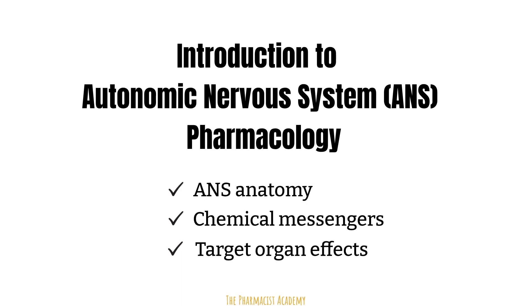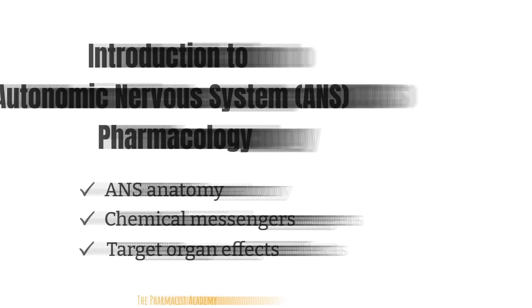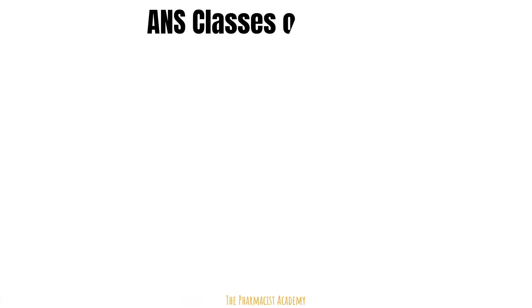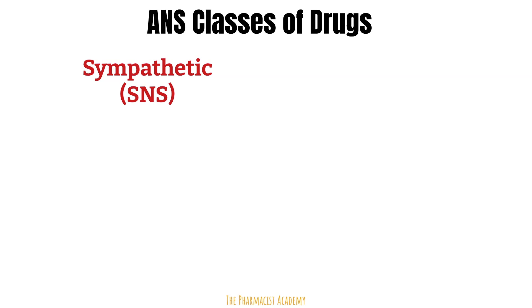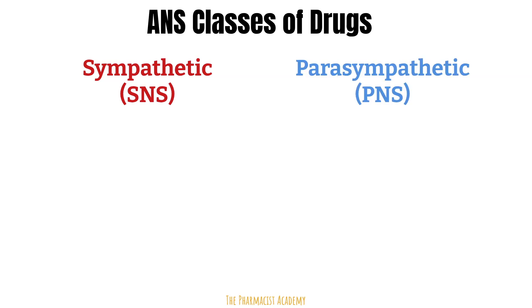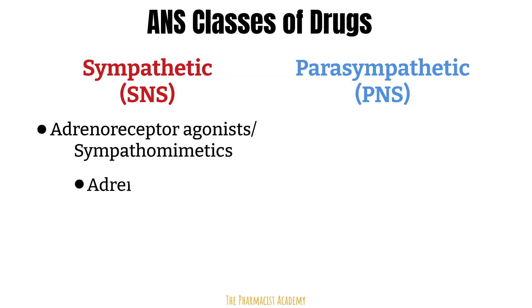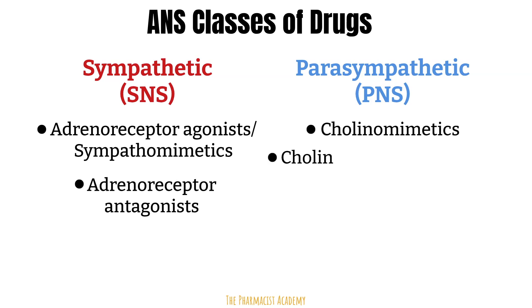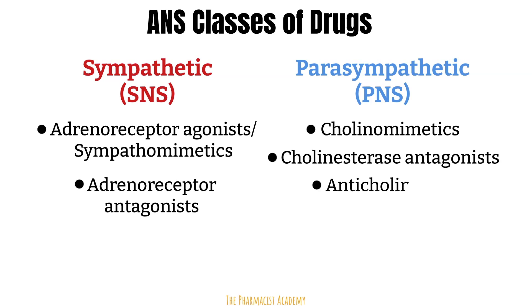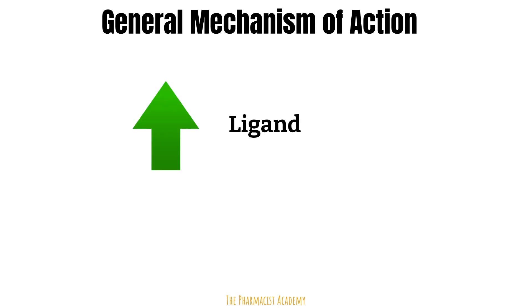In this video, I will focus more on the different classes of drugs on the market that work within the autonomic nervous system and interact with these target organs. The different classes of drugs used within the autonomic nervous system fall under either the sympathetic or parasympathetic division. Under the sympathetic division, we have the adrenergic receptor agonists or sympathomimetics and adrenergic receptor antagonists. Under the parasympathetic division, we have the cholinomimetics, cholinesterase antagonists, and anticholinergics. The general mechanism of action of these drug classes aims to either increase the activity of the ligand or decrease it.